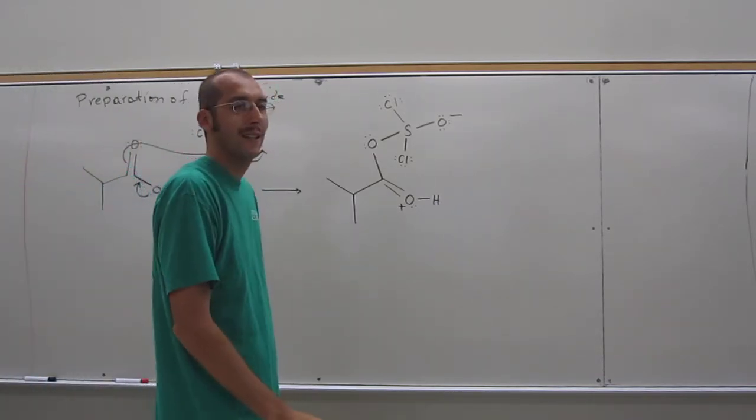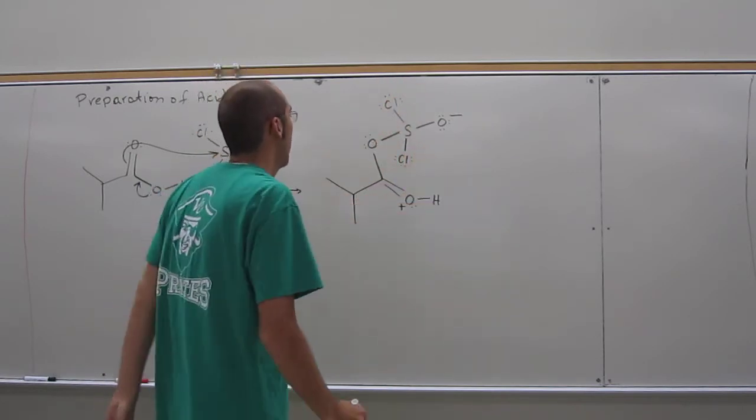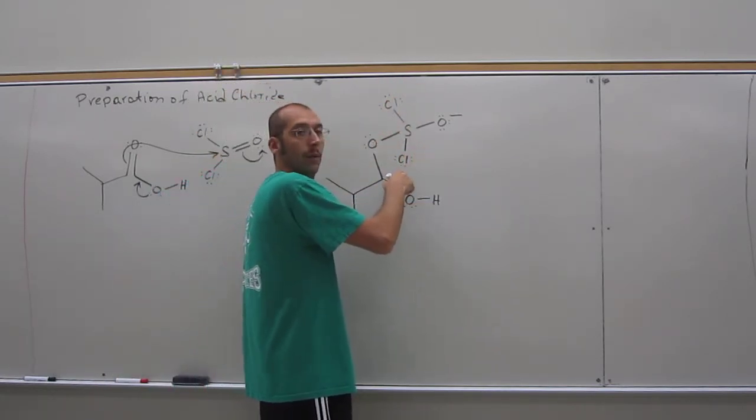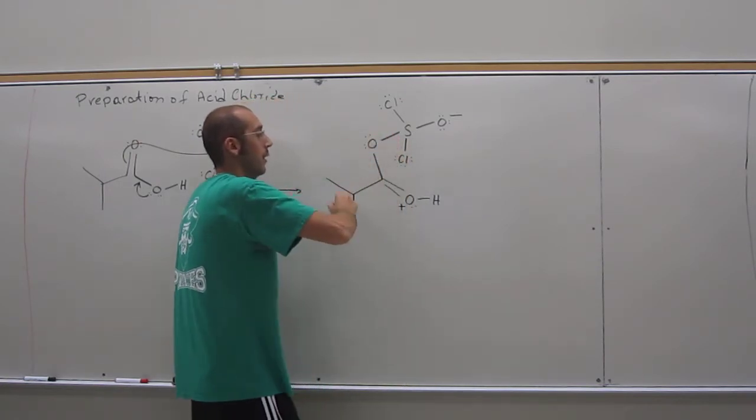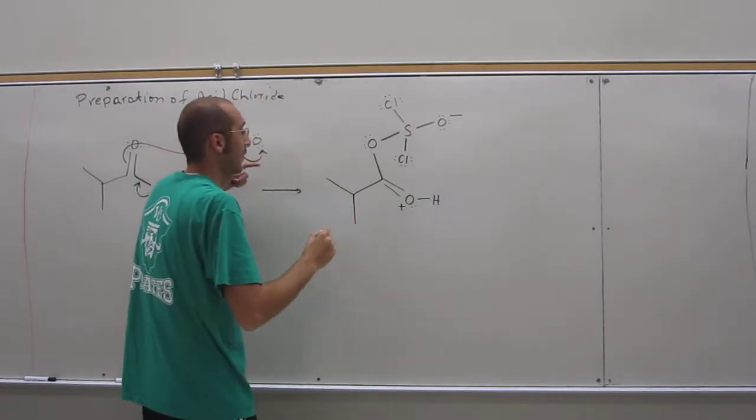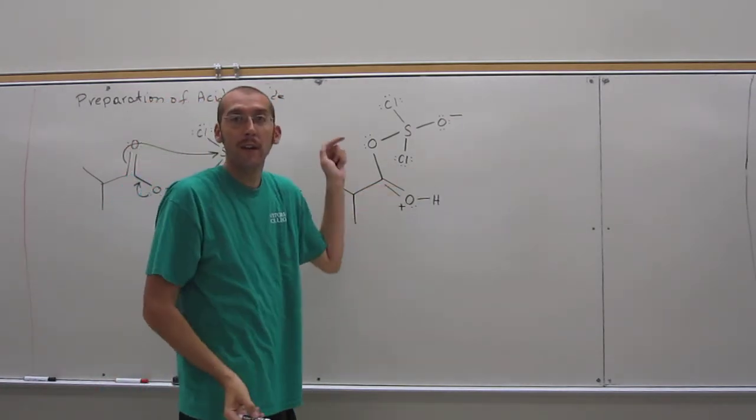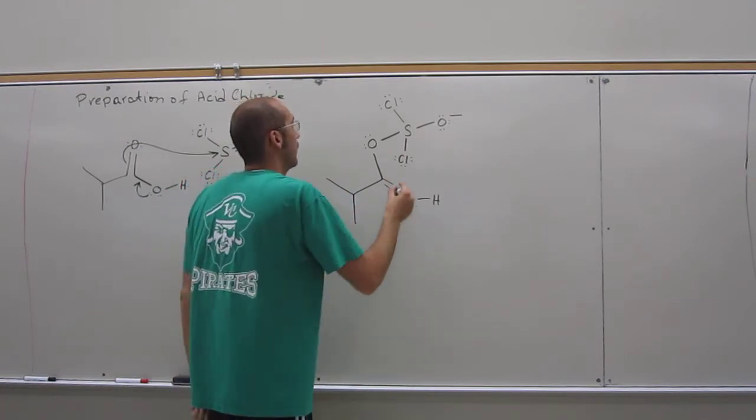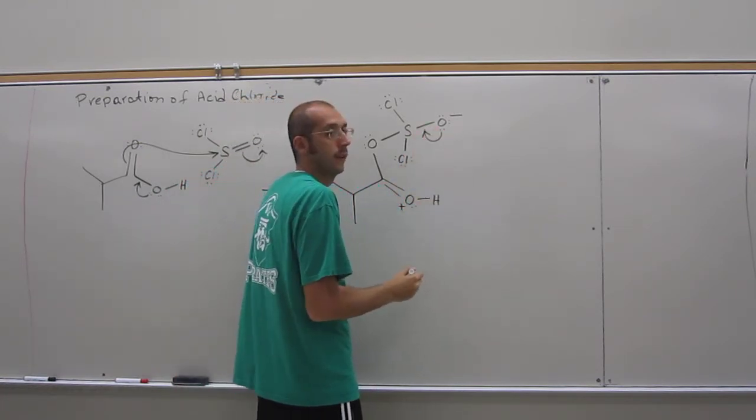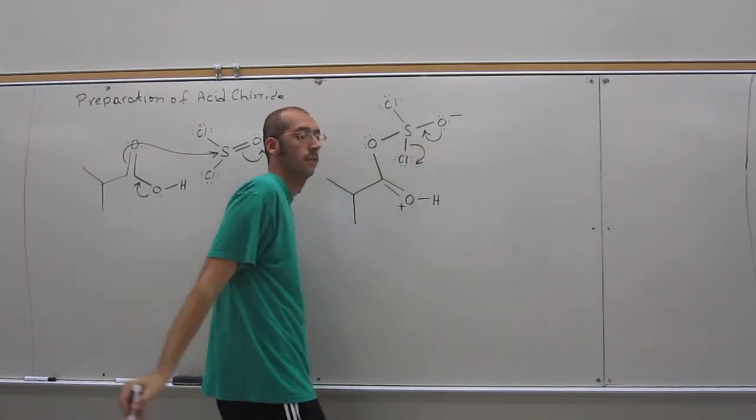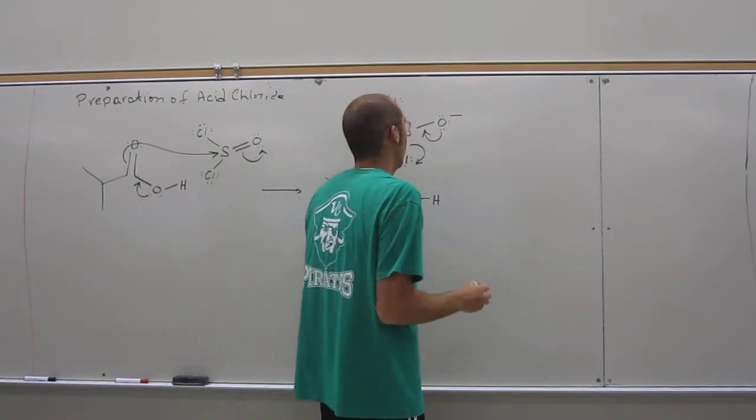In the case of the leaving groups that we have associated around that sulfur atom, the best leaving group is going to be the chlorine atom. It might be this thing that you just attacked, but that's just going to go back that way, so it's not going to produce a productive reaction. So the best leaving group to make the reaction go forward is that chlorine. And once that happens, the reaction goes.